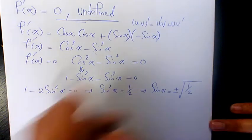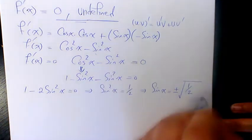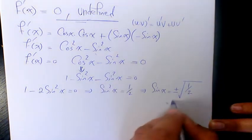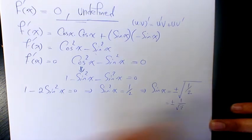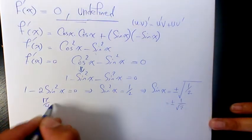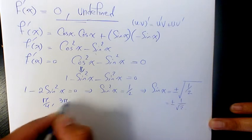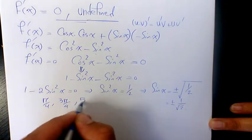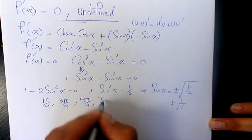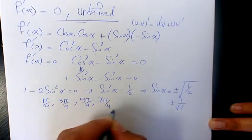From 0 to 2π, we have four solutions: x = π/4, x = 3π/4, x = 5π/4, and x = 7π/4.